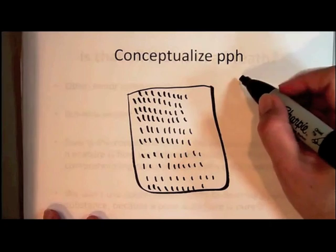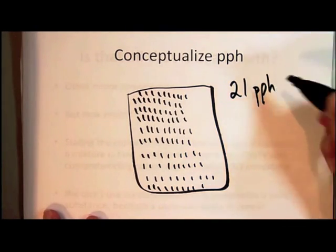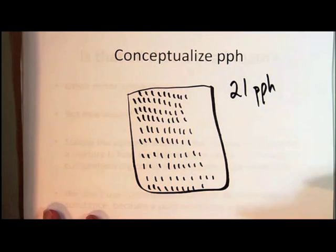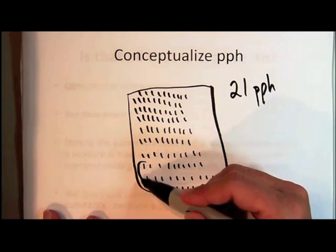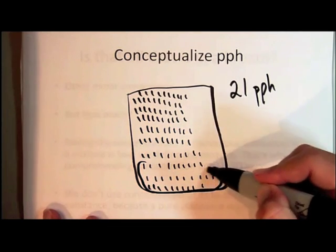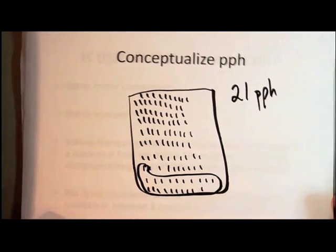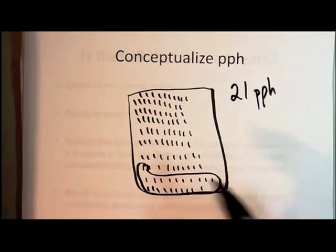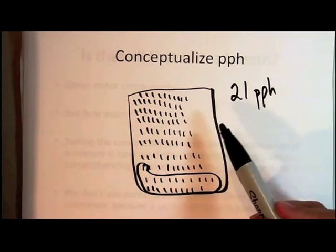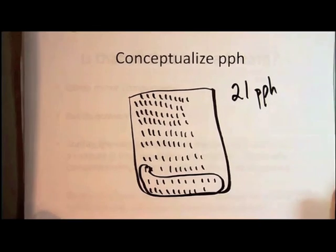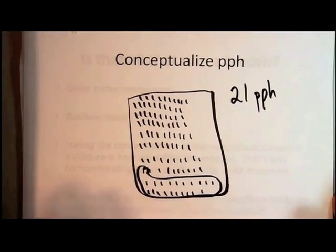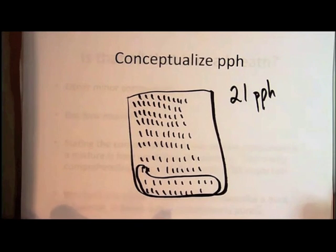I want to conceptualize 21 parts per 100. So in that container, I'm going to have a total of 100 parts. And of those 100 parts, 21 of them would be oxygen. Now, of course, if this were a gas, would these parts be lined up in rows of 10? No, they would not. They would be moving very quickly in all directions, bouncing off of each other in this container. But for now, we're just trying to conceptualize this business of parts per 100.